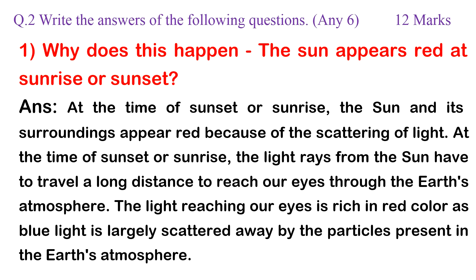Question 1: Why does this happen? The sun appears red at sunrise or sunset. Answer: At the time of sunset or sunrise, the sun and its surroundings appear red because of the scattering of light. The light rays from the sun have to travel a long distance to reach our eyes through the earth's atmosphere. The light reaching our eyes is rich in red color as blue light is largely scattered away by the particles present in the earth's atmosphere.